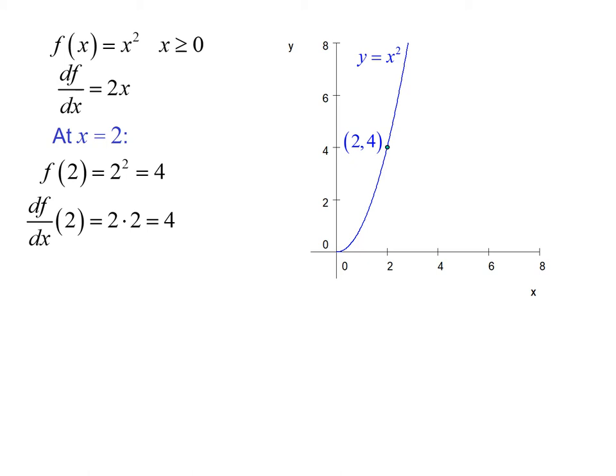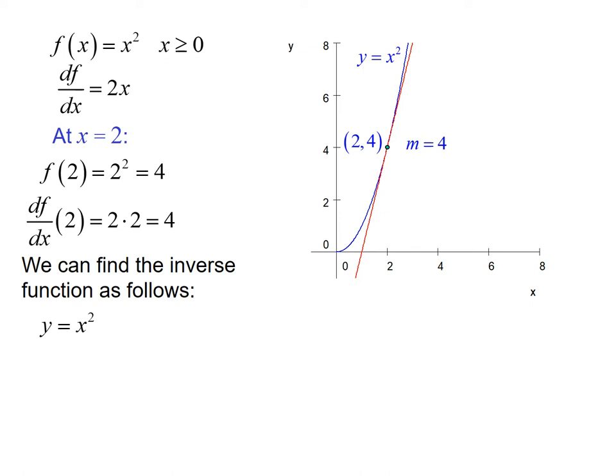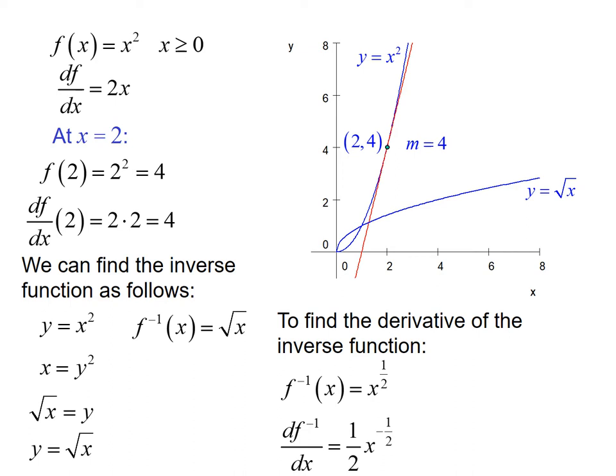Now we're going to take a look at the inverse function. So to come up with the inverse, we have y equals x squared. Switch x and y and get y by itself, so our inverse function is the square root of x. We can look at the derivative of the inverse function. The derivative of the inverse is 1 half x to the negative 1 half, or 1 over 2 root x.